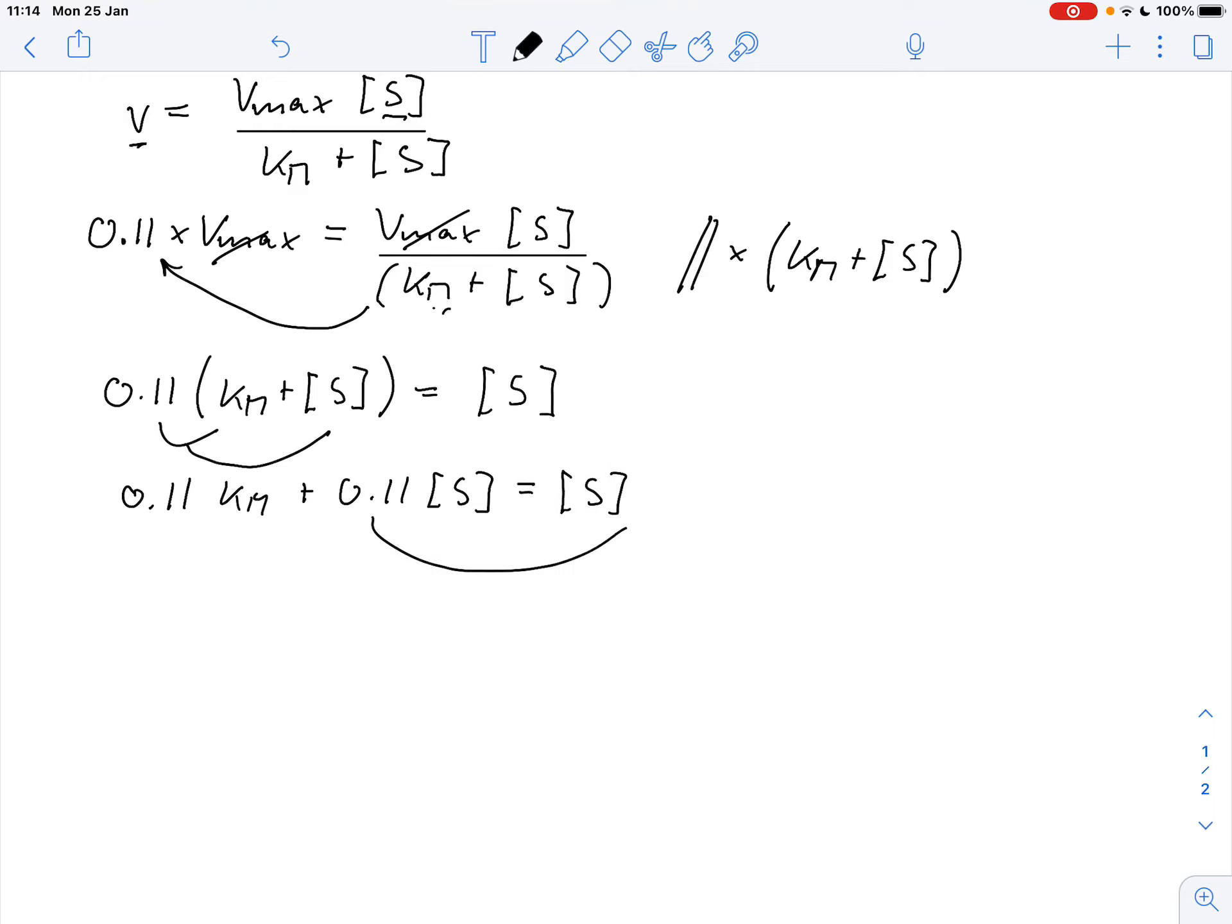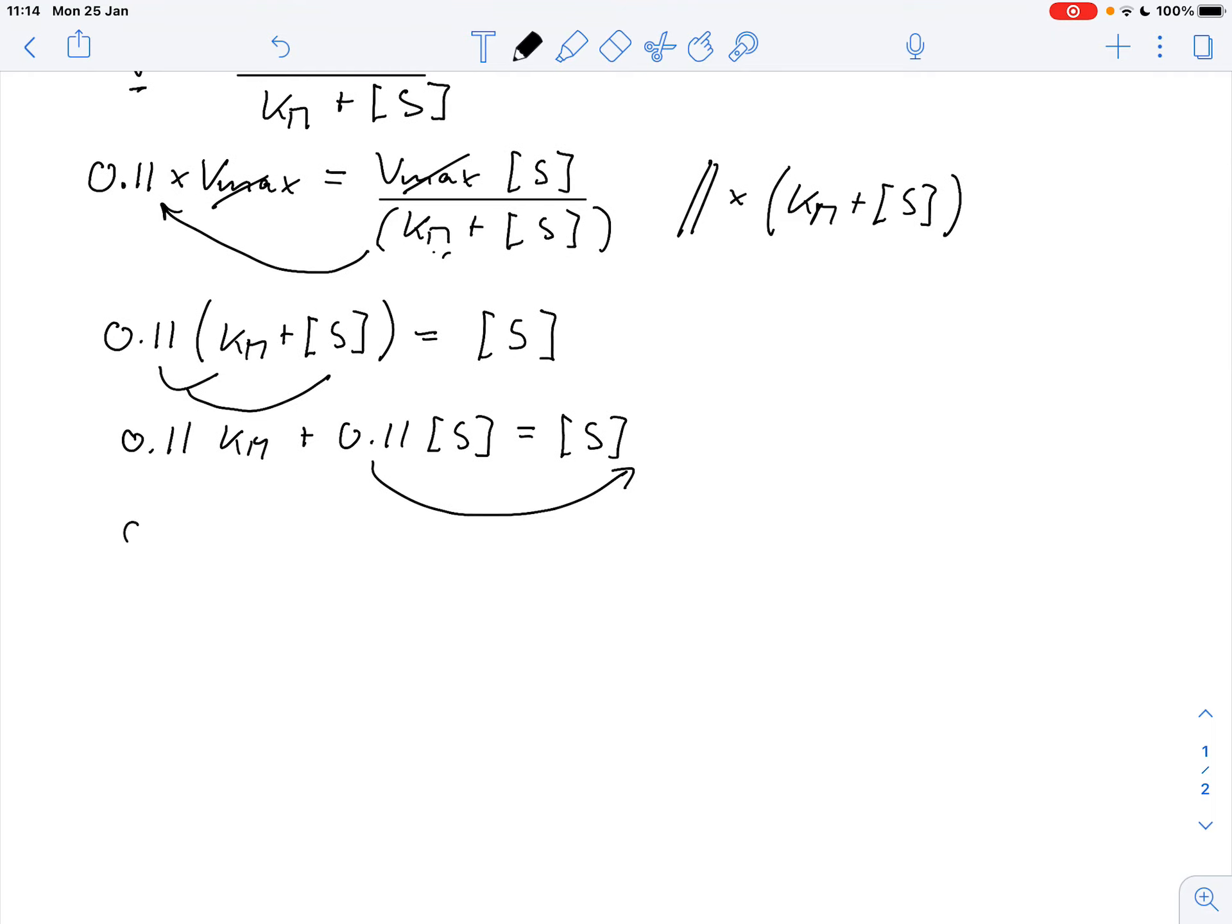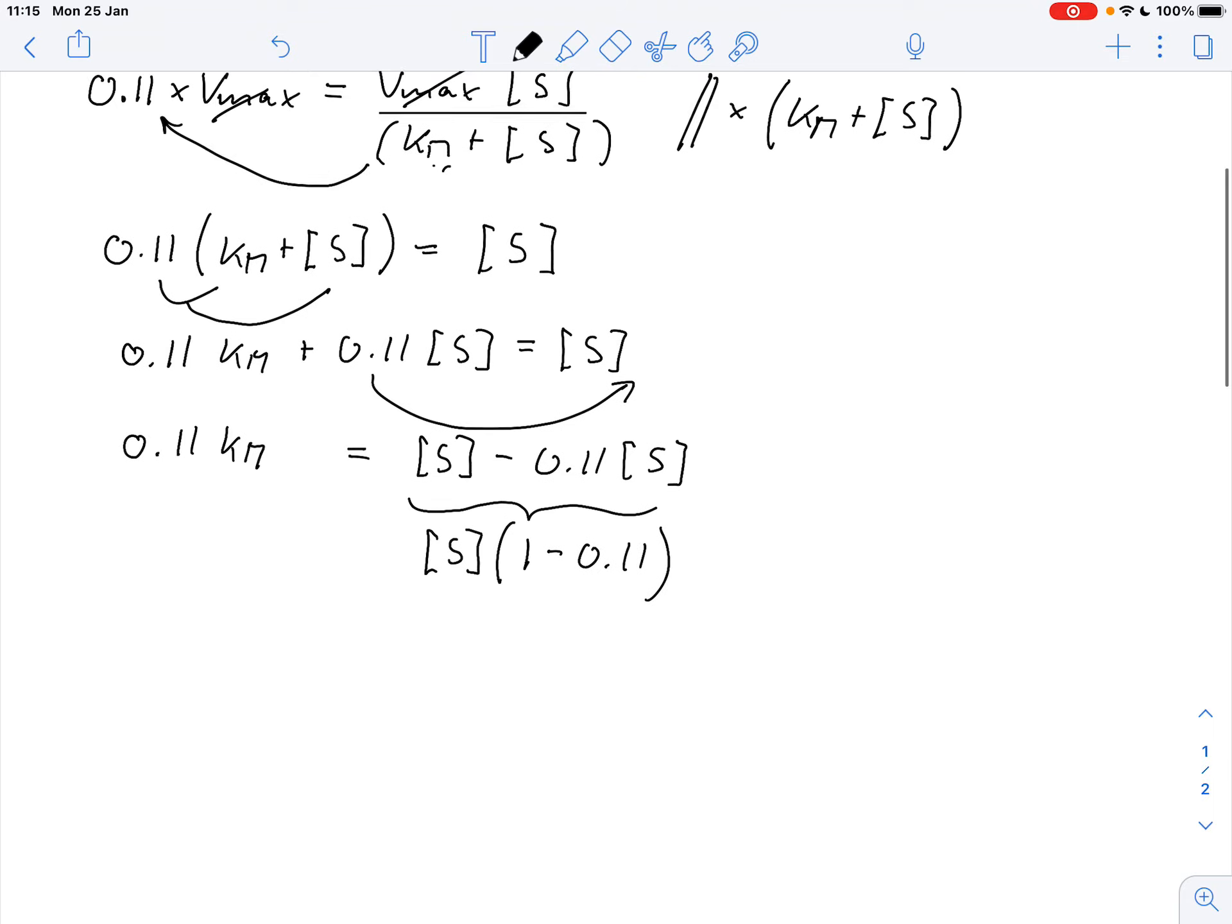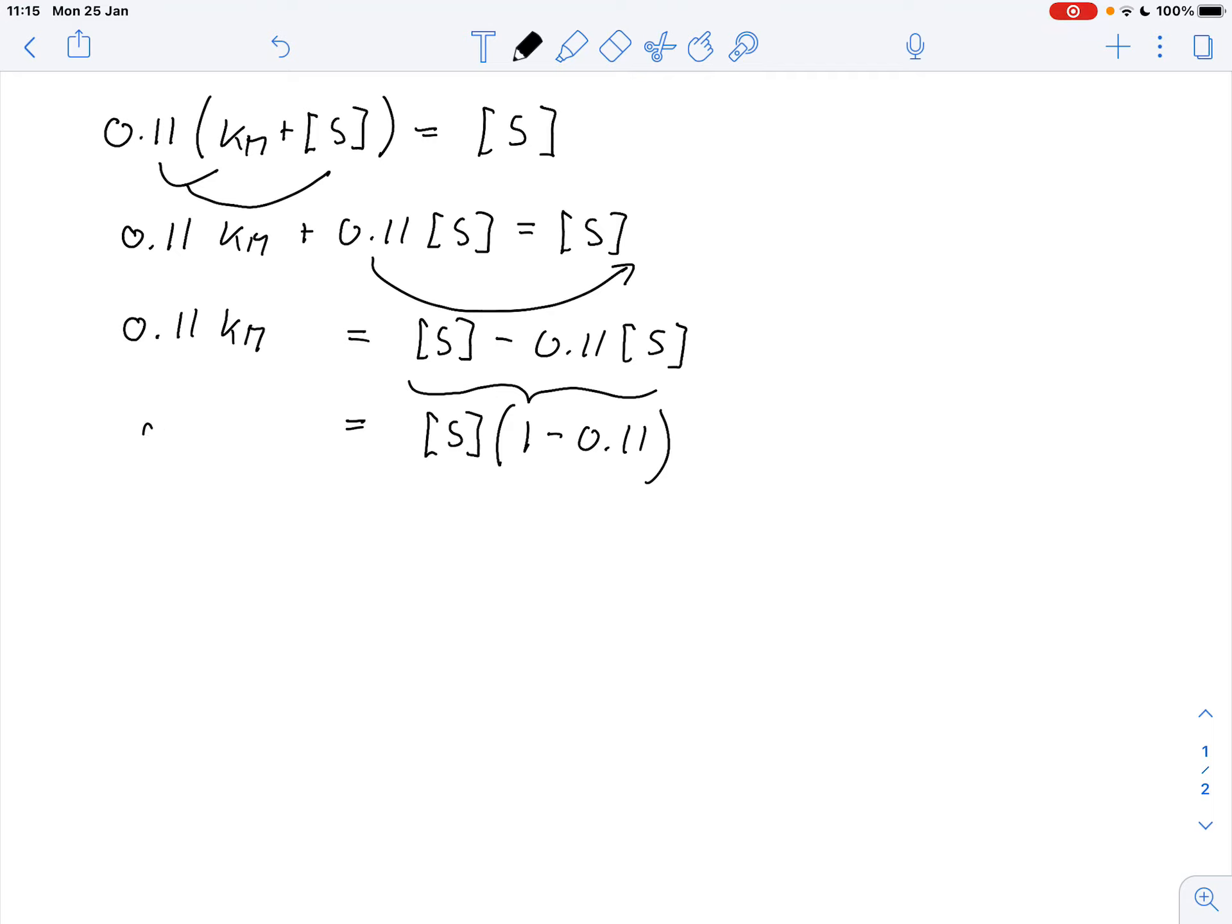So I bring this to the other side and I get 0.11 Km equals 1 times S minus 0.11 S. And I can factor out S here. So this would give me S times 1 minus 0.11. And that is still 0.11 times Km.